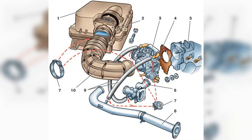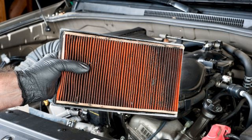Principle of operation of the engine ventilation system. In the design of old models of internal combustion engines, the simplest ventilation schemes were built in, including only one breather located in the crankcase — a link connecting the inside of the cylinder block with the atmosphere, through which crankcase gases came out. This scheme had a significant disadvantage: the exhaust gases contained oil particles which were dispersed into the external environment.